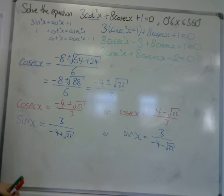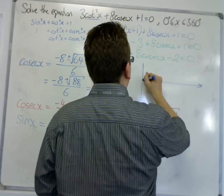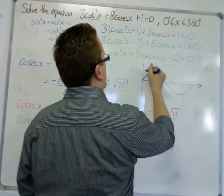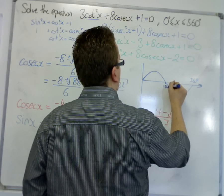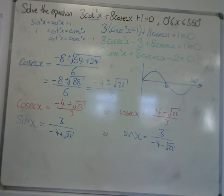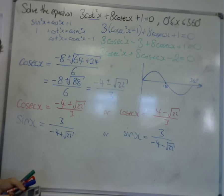Looking at the sine curve between 0 and 360 degrees. Now I would assume that one of these is positive and one of them is negative. -4 + √22.